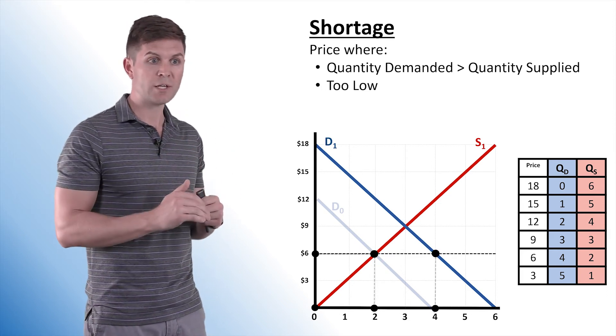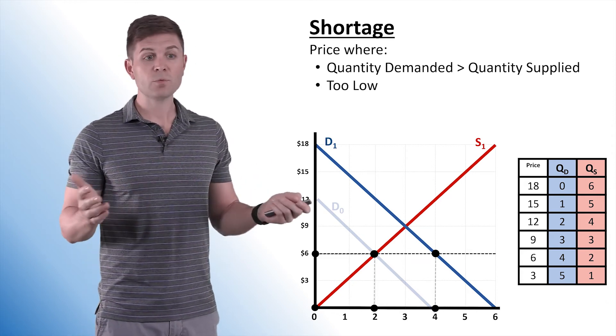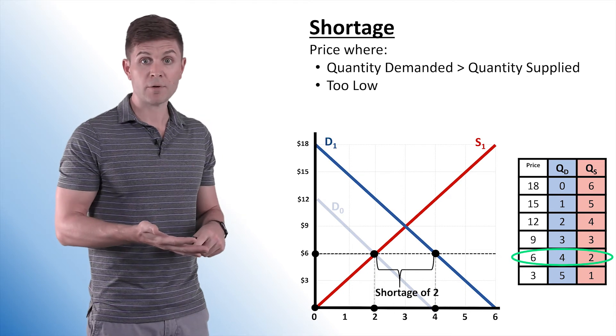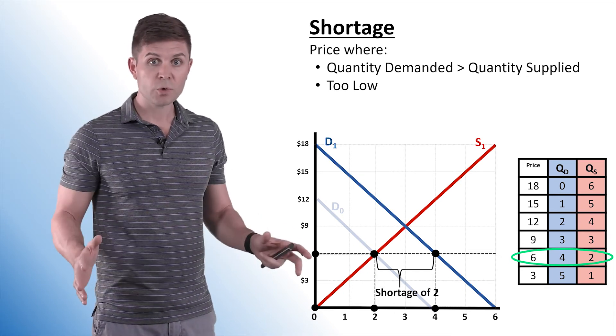So quantity supplied stays the same. So in this case, we have a shortage. We have a quantity demanded of four, which exceeds the quantity supplied of two, giving us that shortage of two units.